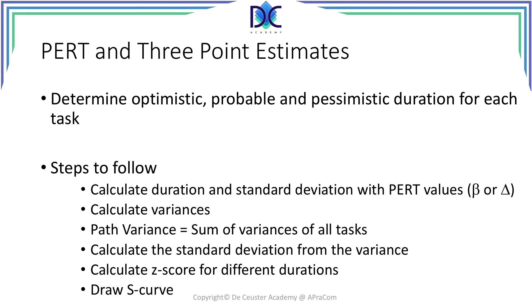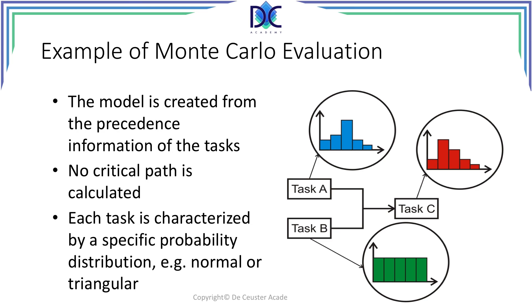Let's look at an example. We have now come to the end of the PERT, three-point, and Monte Carlo methods. The last thing we have to do is to evaluate what responses we can allocate to threats, opportunities, and both.